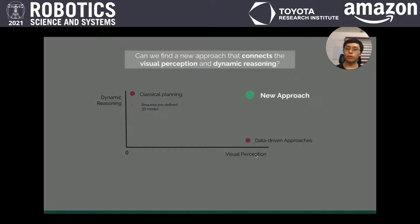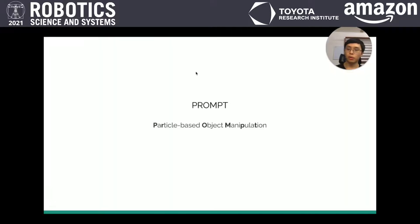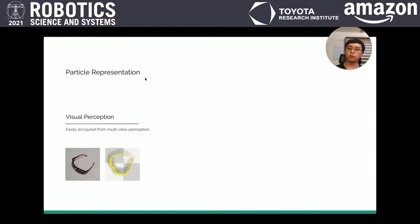The question is, can we find a new approach that sits in between and connects the visual perception to deal with unseen objects and also reasons about the dynamics and physics? We are proposing an approach called Particle-Based Object Manipulation. The key is the particle representation, which is a set of points inside 3D space with different attributes.